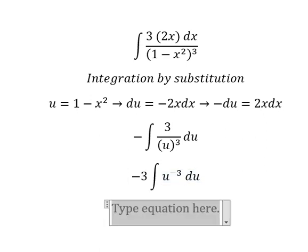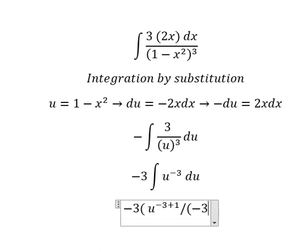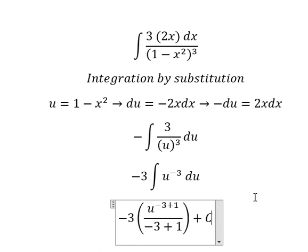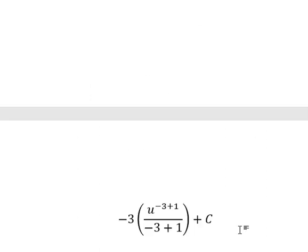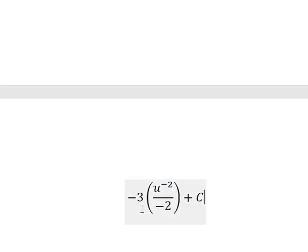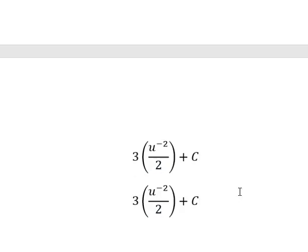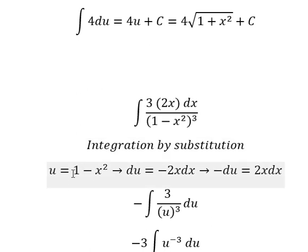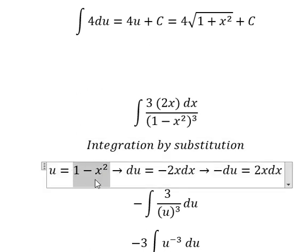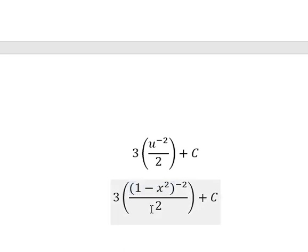We put u to the power of negative 3 with number three outside. The integral of u to the power of negative 3 gives us u to the power of negative 3 plus 1 over negative 3 plus 1, plus C. This gives negative 2, over negative 2, and the two negatives simplify. The final answer is expressed in terms of u, which is the final answer.